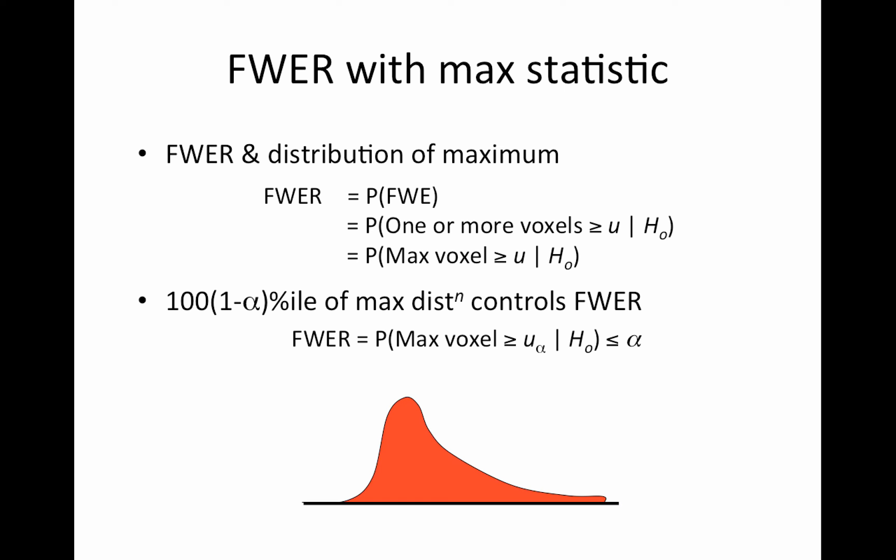So let's say we have it. It's no longer going to look like our lovely familiar Gaussian distribution, but it'll look something like this. And you find some threshold U_alpha such that the upper tail probability is alpha.